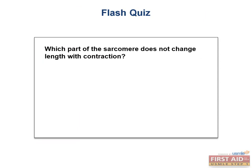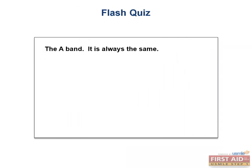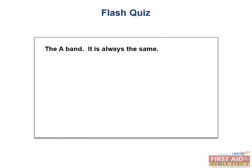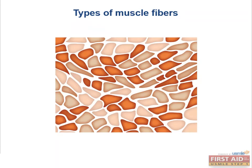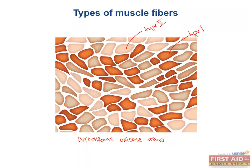Let's have a flash quiz. What part of the sarcomere does not change length with contraction? The A band is always the same. Before we go further into the nitty-gritty of the power stroke, are there different types of muscle fibers? Yes, there are two. This is a cytochrome oxidase stain, where the type 1 fibers stain dark and the type 2 stain light. You should think about type 1 fibers as being responsible for sustained contraction, while type 2 fibers are responsible for fast twitch.